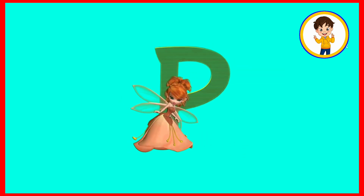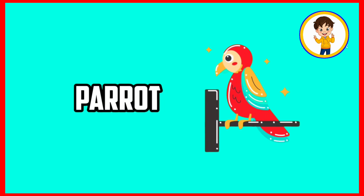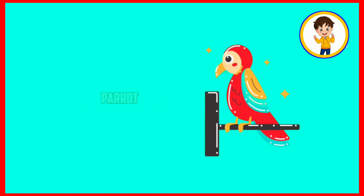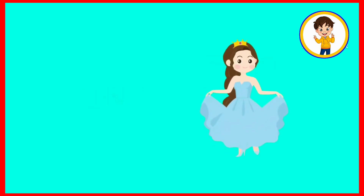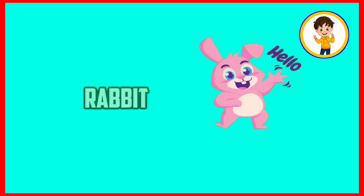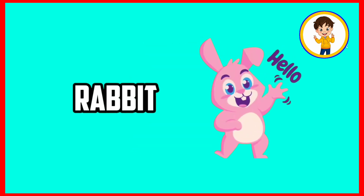P. P is for parrot. Parrot means dhota. Q. Q is for queen. Queen means running. R. R is for rabbit. Rabbit means kargosh.